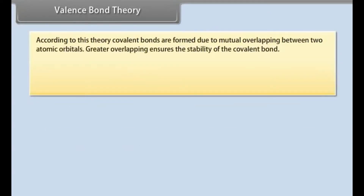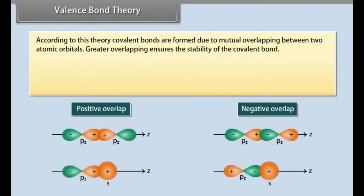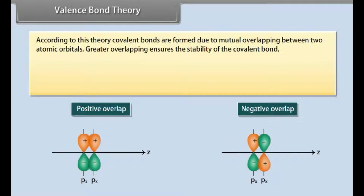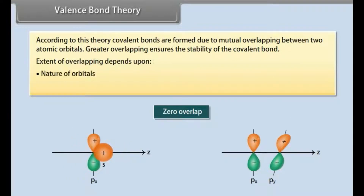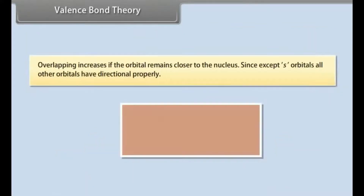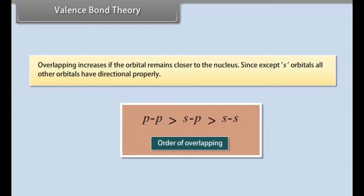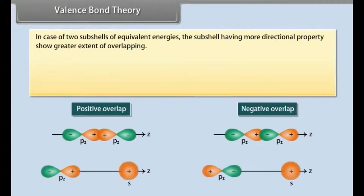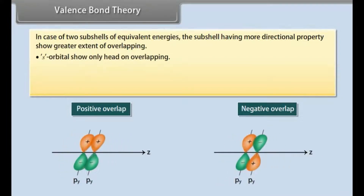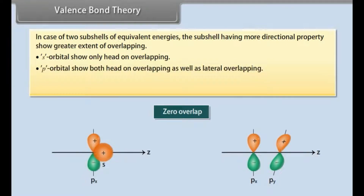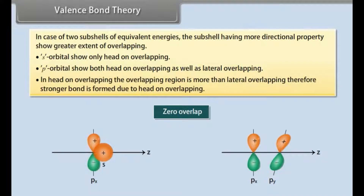According to Valence Bond Theory, covalent bonds are formed due to mutual overlapping between two atomic orbitals. Greater overlapping ensures the stability of the covalent bond. The extent of overlapping depends upon the nature of orbitals and the nature of overlapping. Overlapping increases if the orbital remains closer to the nucleus. Except for S orbitals, all other orbitals have directional property. In case of two subshells of equivalent energies, the subshell with more directional property shows greater overlapping. S orbitals show only head-on overlapping, while P orbitals show both head-on and lateral overlapping. Head-on overlapping forms a stronger bond than lateral overlapping.